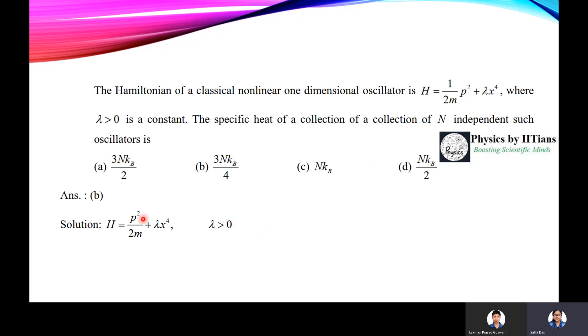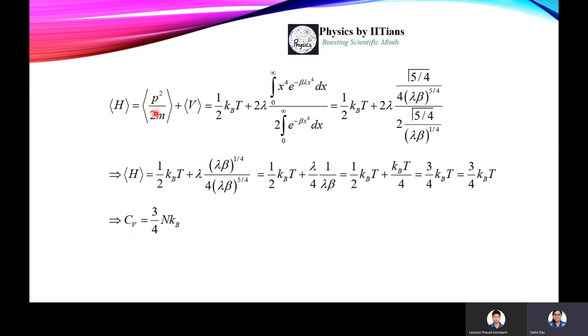First of all, the Hamiltonian has been given. You have to find out the average of Hamiltonian that will give you the internal energy U, and then you have to take del U by del T at constant V to get the specific heat. So how do you find it out? H average is p square by 2m average plus V average. Now p square by 2m average will give you half kbT since this is from equipartition theorem, that is this a quadratic term and it will give the value half kbT.